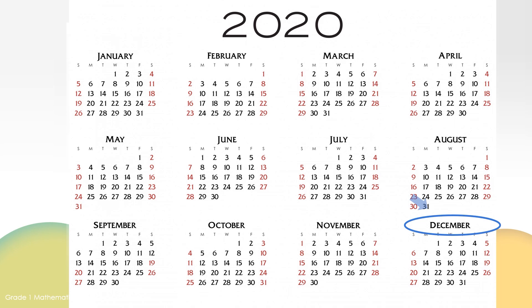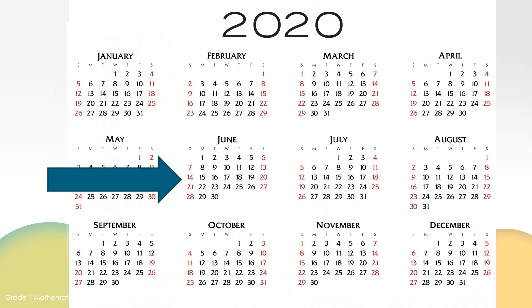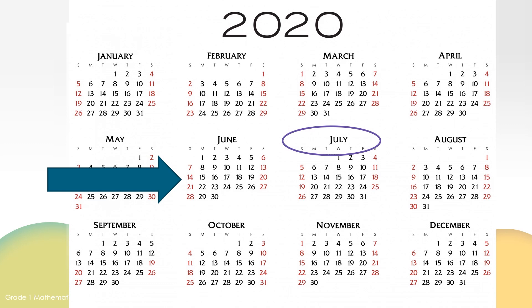What is the name of this month? June. What month comes before June? May. May comes before June. What month comes after June? July. July comes after June.